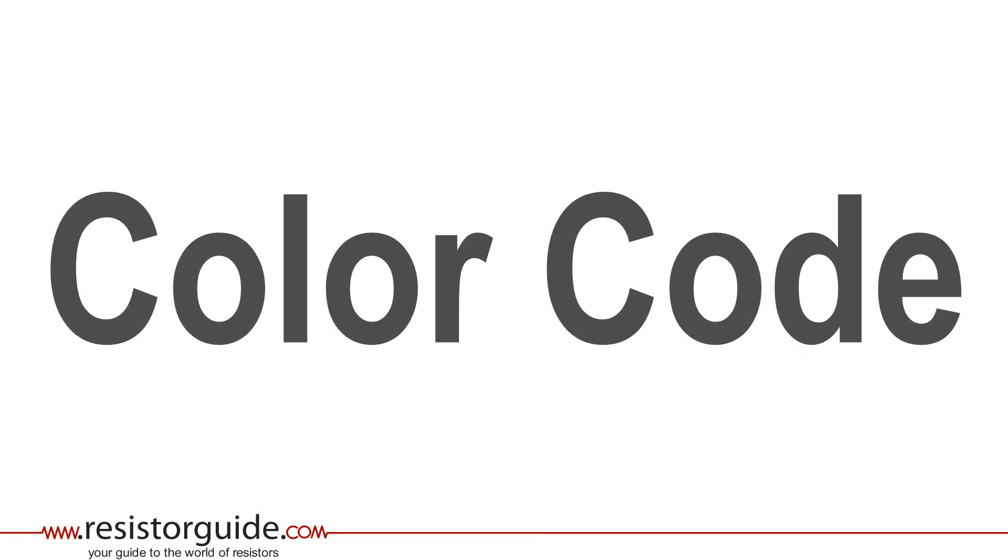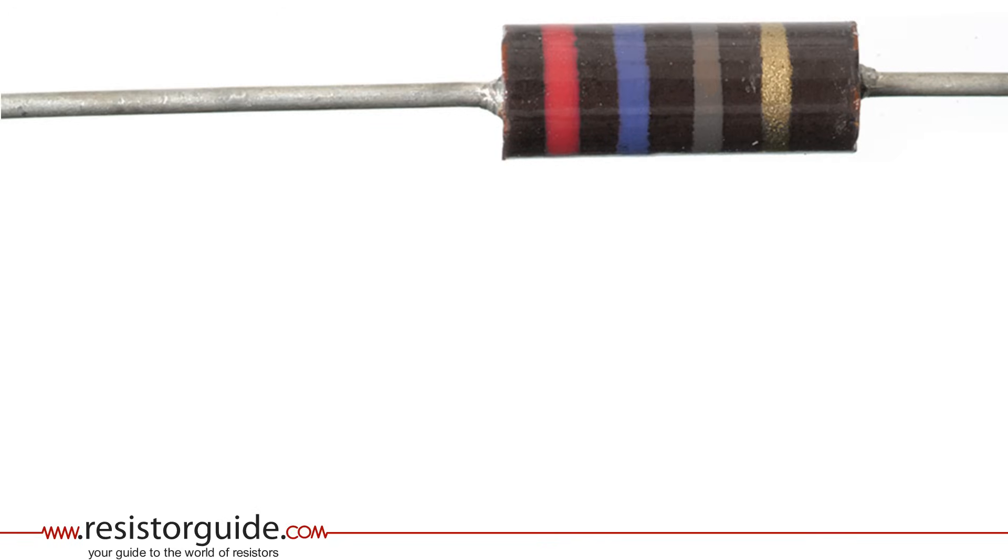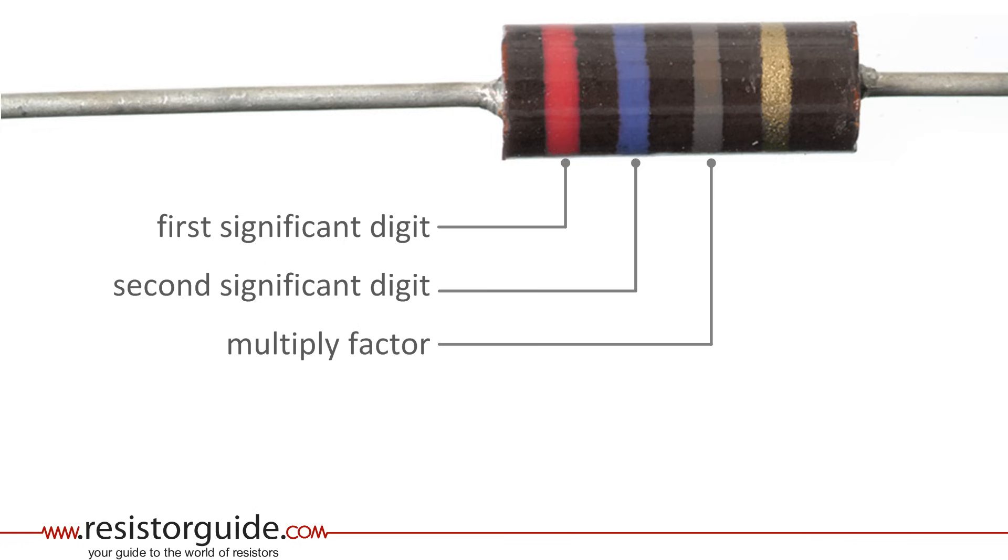Most axial leaded resistors have a marking with colored bands to indicate the resistance value and tolerance. This resistor is a carbon composition resistor with four color bands. The first band gives the first digit of the resistance value. The second band gives the second digit. The third band indicates a multiplication factor. And the fourth band gives away the tolerance of the resistor.